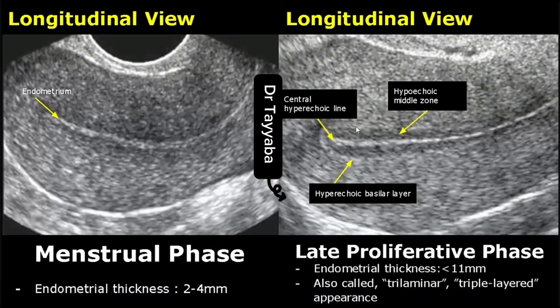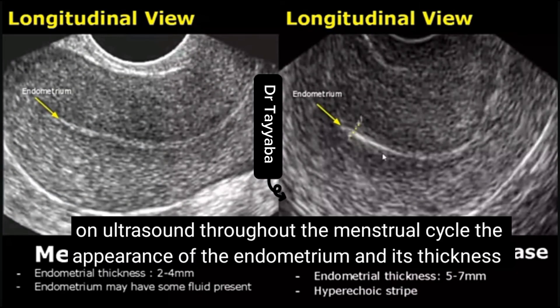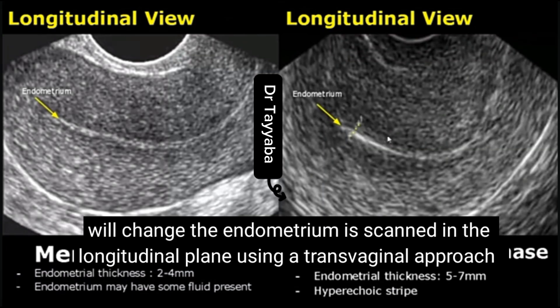Hello everyone, it's Dr. Tepa and today we will discuss endometrial thickness on ultrasound. Throughout the menstrual cycle, the appearance of the endometrium and its thickness will change. The endometrium is scanned in the longitudinal plane using a transvaginal approach.